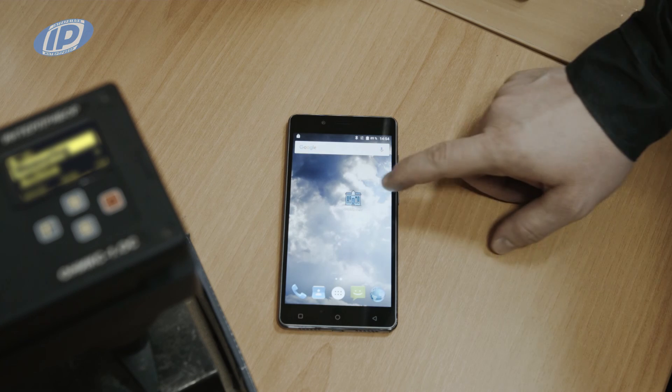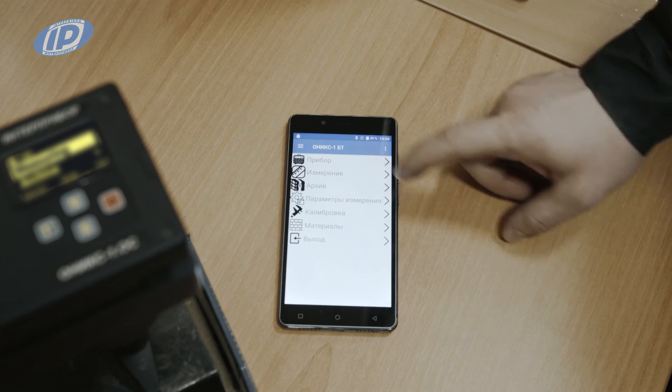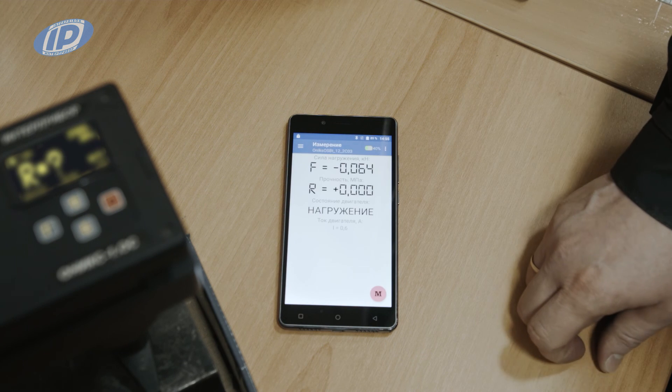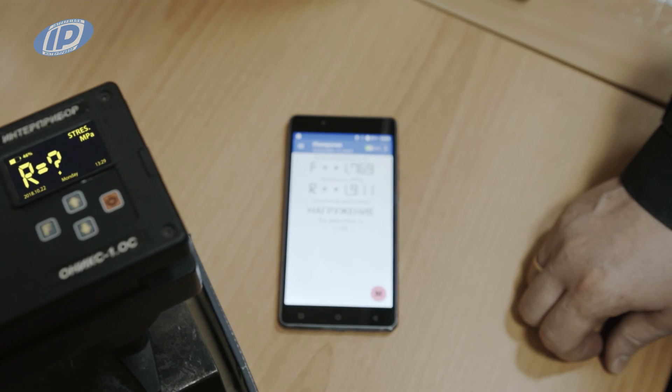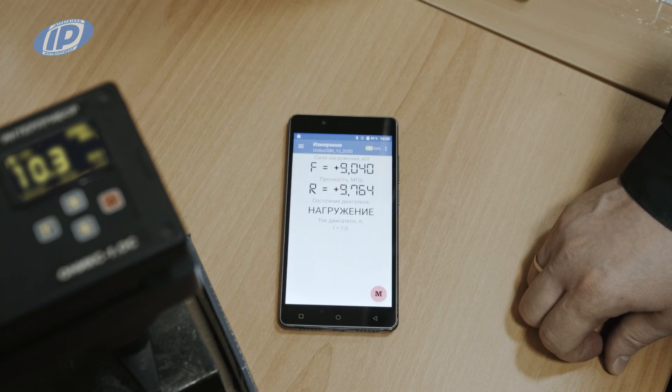The tester also has an option which allows it to operate via Bluetooth using your smartphone. In this case, all data are displayed on the display of the smartphone and recorded in the memory of both the tester itself and the smartphone.